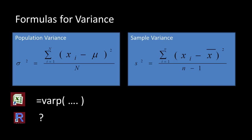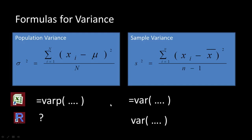For the sample you sum up to n, which is the sample size. In Excel, you can calculate the population variance using VAR.P and the sample variance using VAR. In R, there is no specific function for population variance; variance is calculated using var().